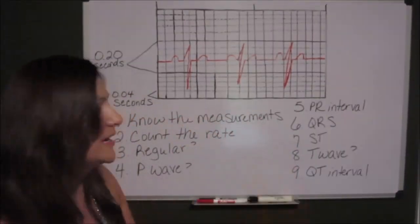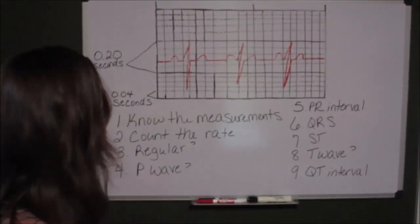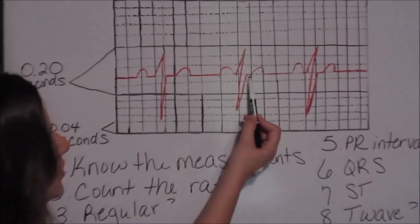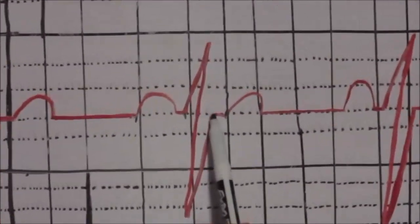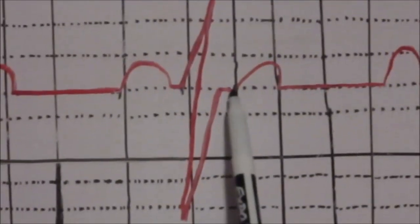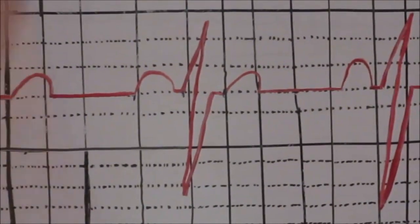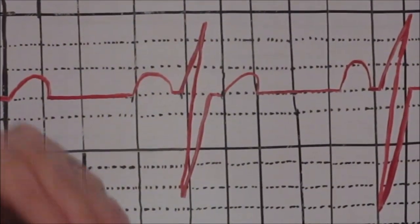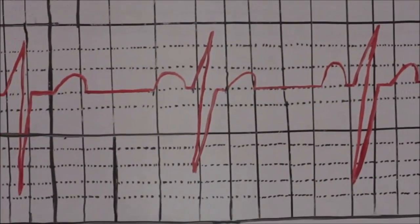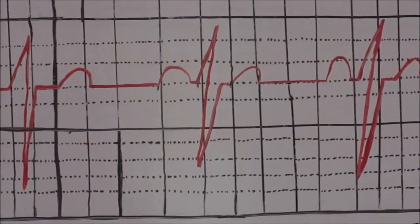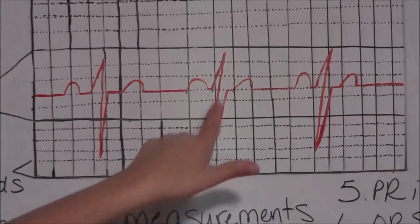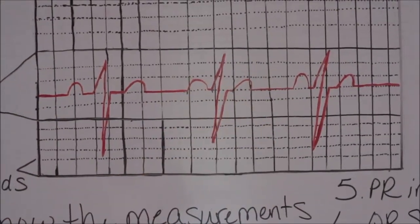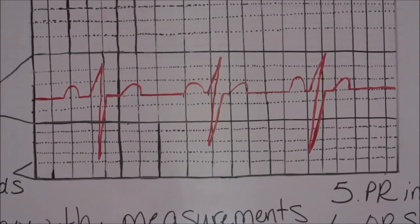Number 7. We're going to look at the ST segment. That's just the short little segment in between where the S wave comes back up to the isoelectric line to where the T wave starts to leave it. If it is depressed or elevated, then that's going to indicate ischemia or infarction. Our ST segment here is great, no problems.